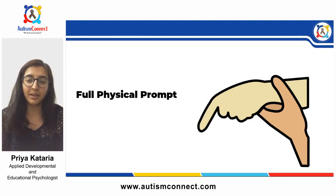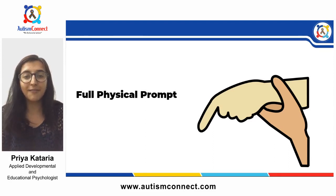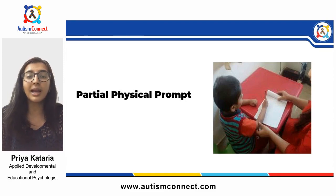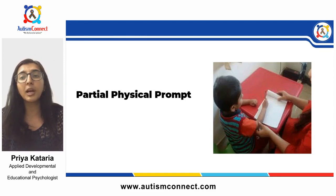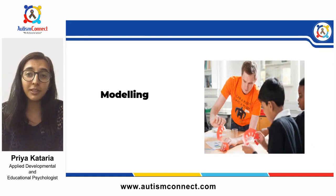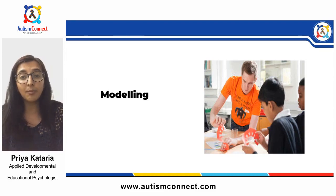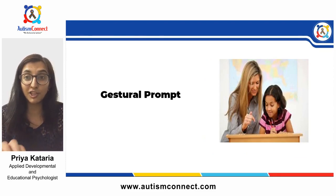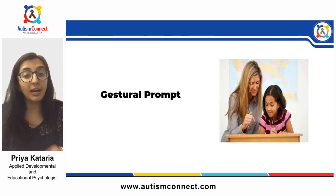Let's understand each prompt in detail. The first is the full physical prompt — physically moving your child's hand and body to complete the response, sometimes referred to as hand-over-hand prompting. For example, if you want your child to pick up a toothbrush, you move their hand to the toothbrush and guide them through the process. The second is partial physical prompt — you're still touching the child but providing minimal physical guidance. You may touch the child's elbow to begin the movement, but most of the movement is led by the child.